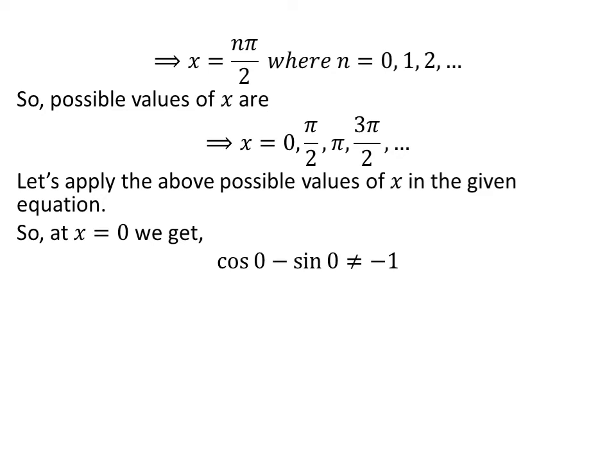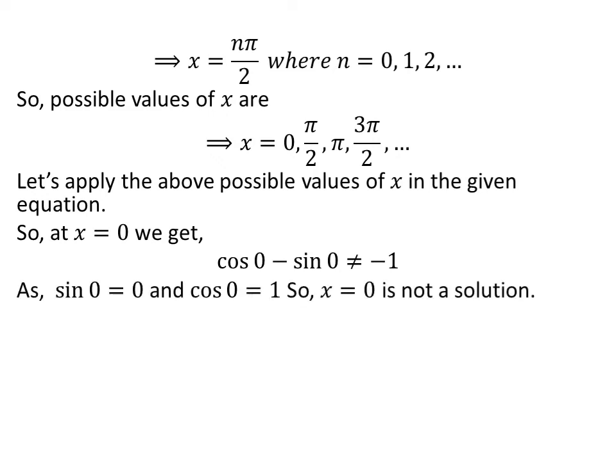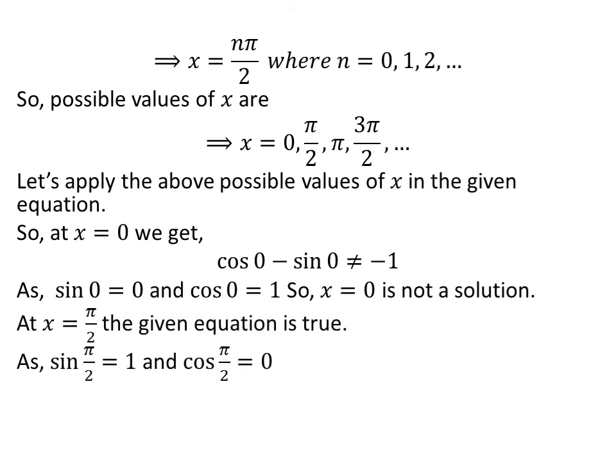Let us apply the possible values of x in our given equation: cosine of x minus sine of x is equal to minus 1. Applying x equals 0: cosine of 0 minus sine of 0 is not equal to minus 1, since sine of 0 is 0 and cosine of 0 is 1, so x equals 0 is not a solution. Now trying x equals half of pi: since sine of half of pi is 1 and cosine of half of pi is 0, the equation holds, so x equals half of pi is a solution.